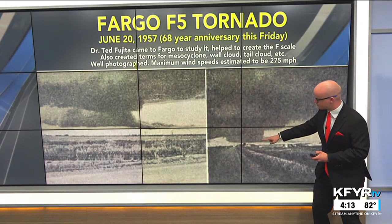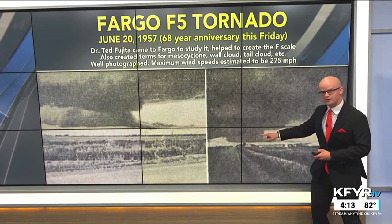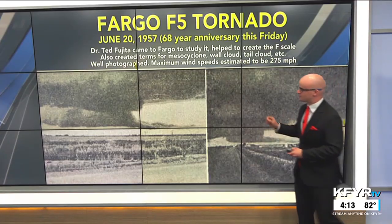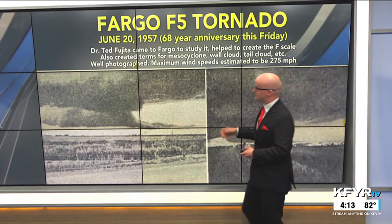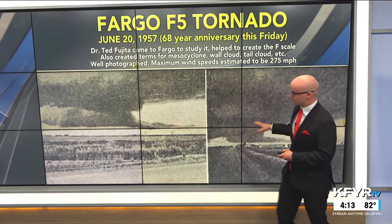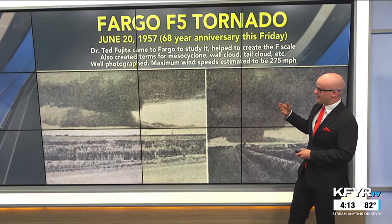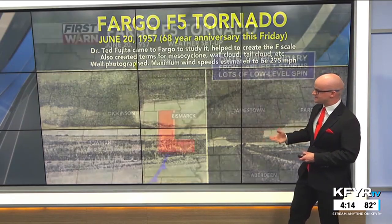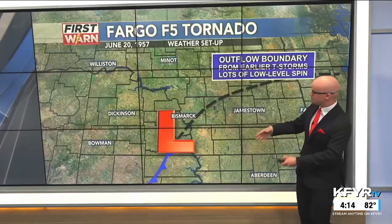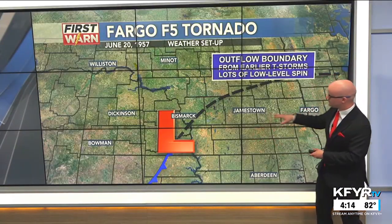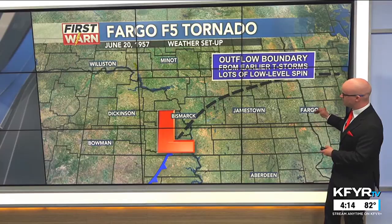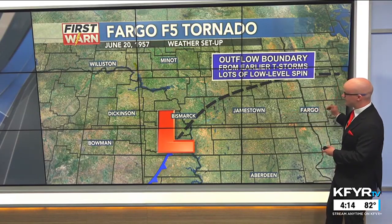The Fargo tornado also led to the creation of terms like mesocyclone, rotating supercell, and wall cloud, because the storm was very visible and highly photographed. That lowering from the thunderstorm is called a wall cloud, from which the tornado emerges. There were many, many photographs of this storm as it tracked towards the Fargo area, part of a family of tornadoes that moved along what would become the I-94 corridor.